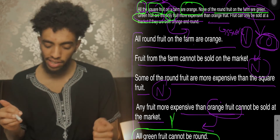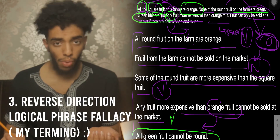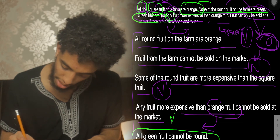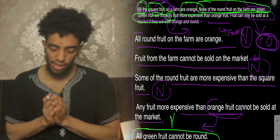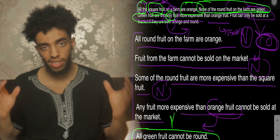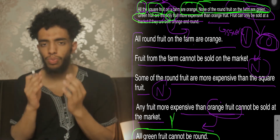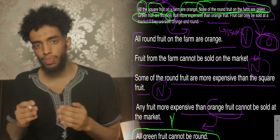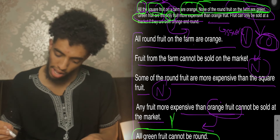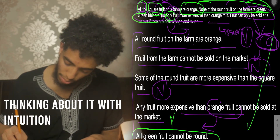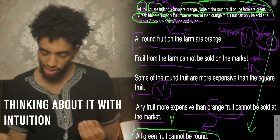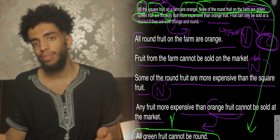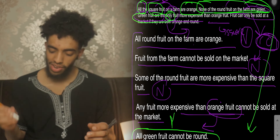Finally: 'All green fruits cannot be round.' This goes back to an earlier tip — this is going in the reverse direction and is faulty logic. The original statement says none of the round fruits on the farm are green. Reversing it to 'all green fruits cannot be round' doesn't hold. We know of green vegetables like broccoli and celery that are not round, so the example given is just one small farm — not definitive.